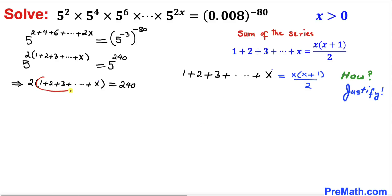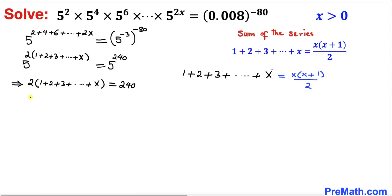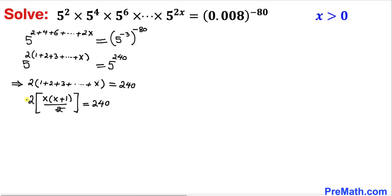Replacing the sum inside the parentheses, we get 2 times x times (x plus 1) divided by 2, equals 240. The 2's cancel, and we end up with x times (x plus 1) equals 240.